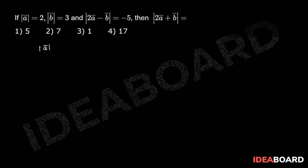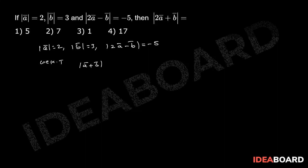Given mod a bar equal to 2, mod b bar equal to 3, modulus of 2a bar minus b bar equal to minus 5. We know that modulus of a bar plus b bar whole square plus modulus of a bar minus b bar whole square equals 2 into modulus of a bar square plus modulus of b bar square.